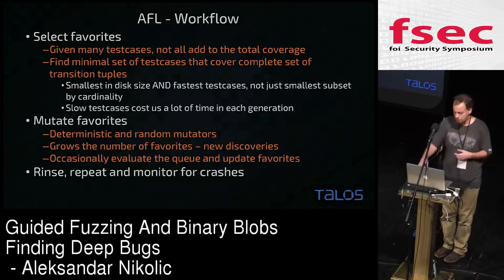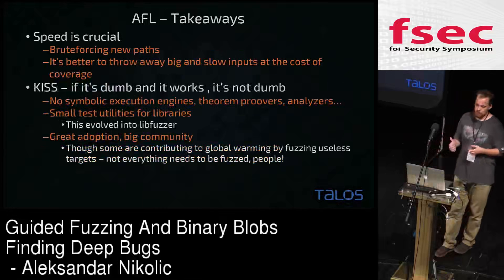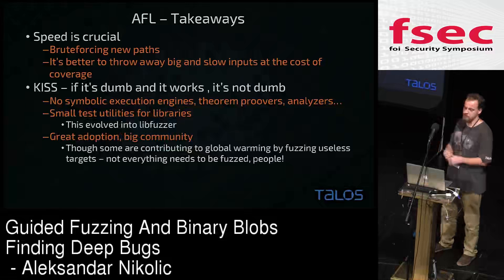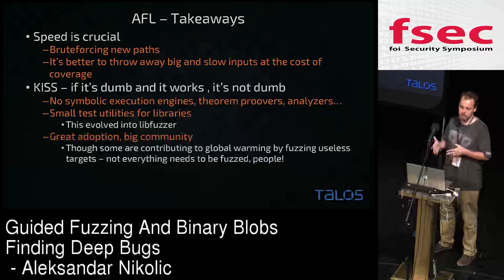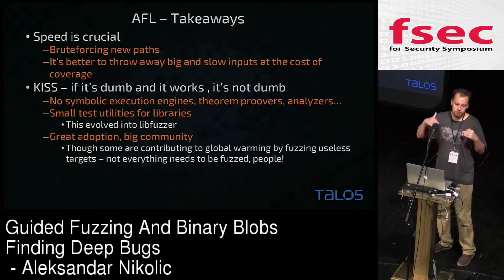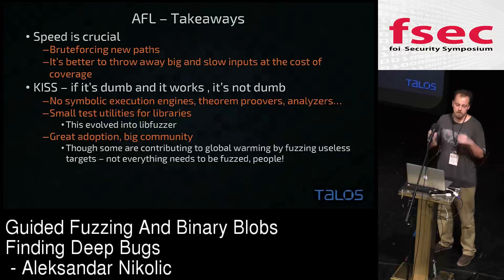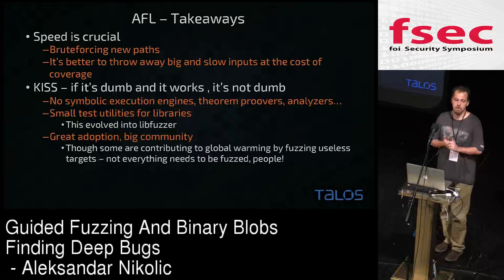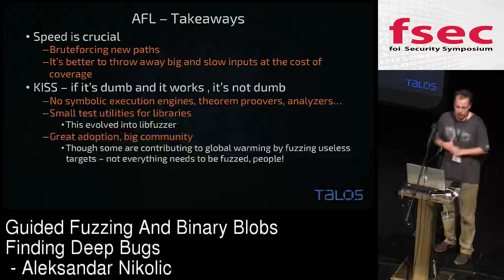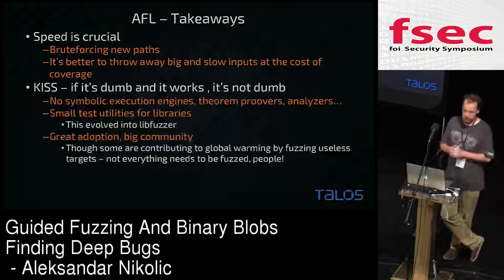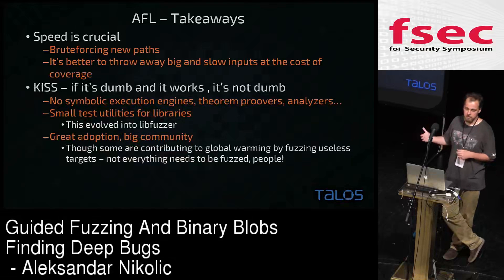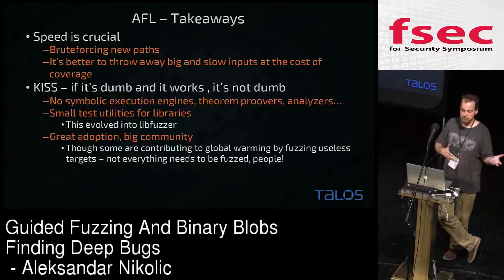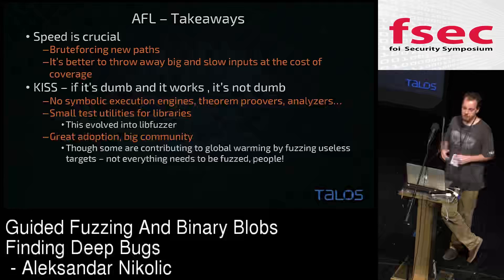AFL basically does that until you tell it to stop — it just never stops. The main things people have understood from using AFL: speed is crucial, because here we're doing brute force vulnerability discovery and need to push as many test cases per second as possible. It's better to throw away big and slow inputs because they cost you a lot in a genetic algorithm setting. Also, the KISS principle — keep it simple, stupid — is employed throughout. No fancy algorithms, no symbolic execution engines, solvers, or taint propagators. Just brute force with a really simple algorithm.